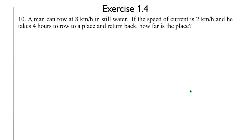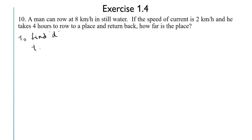Now we will solve the remaining questions of exercise 1.4 from chapter 1 of Applied Mathematics by M. L. Agarwal. The 10th question is: a man can row at 8 kilometer per hour in still water. If the speed of the current is 2 kilometer per hour and he takes 4 hours to row to a place and return back, how far is the place? We are given the speed in still water as 8, speed of current as 2 kilometer per hour, and total time as 4 hours. We have to find the distance d.